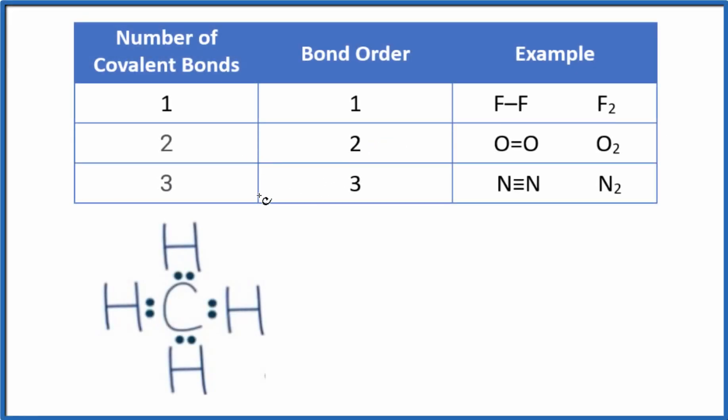Let's take a look at the bond order for CH4. That's methane. So when we look at methane, we have one, two, three, four single bonds. And these are single bonds. So we have a pair of electrons shared between the carbon and the hydrogen. That's a covalent bond.